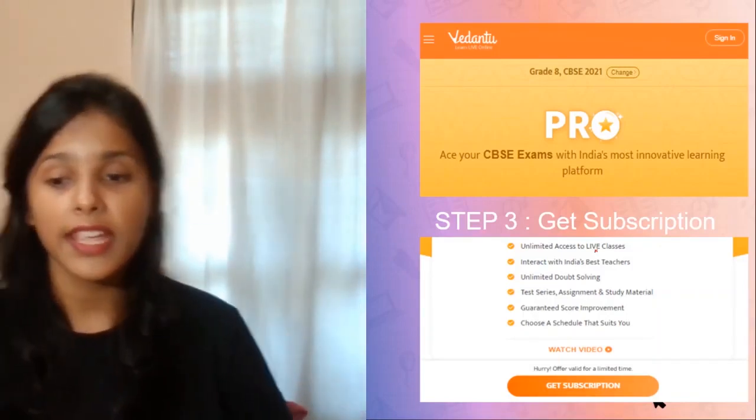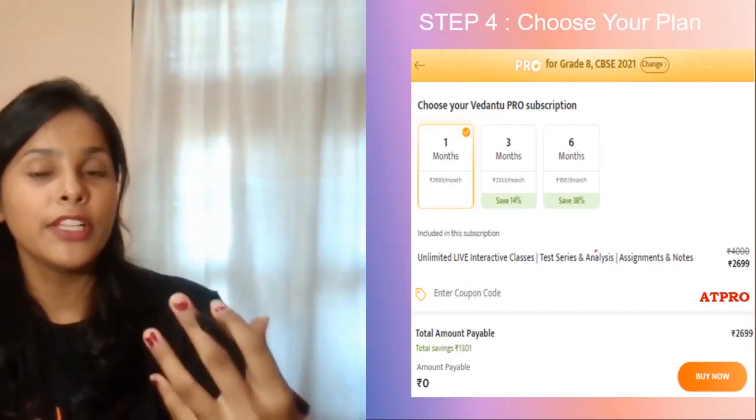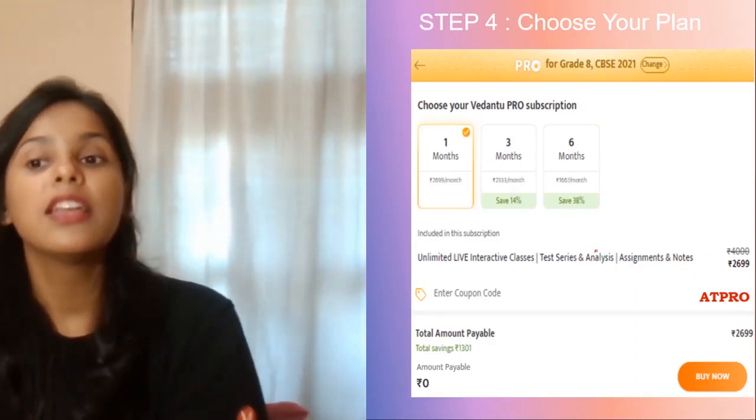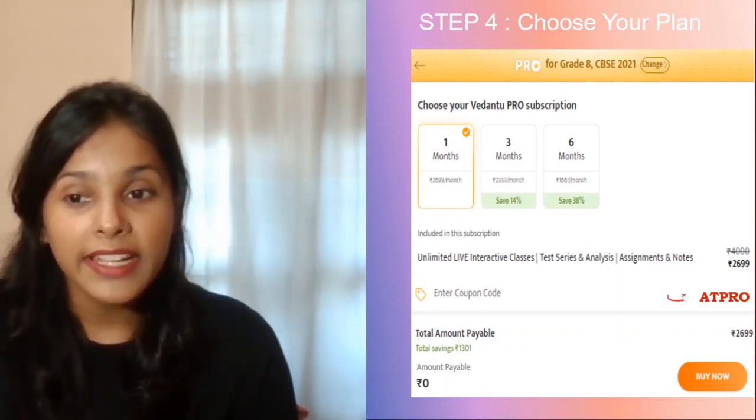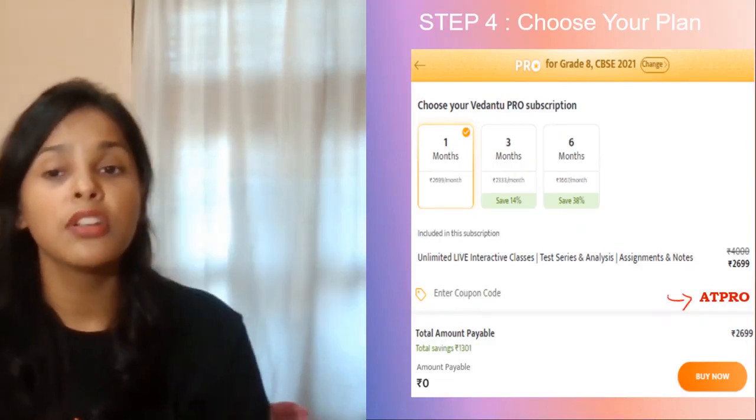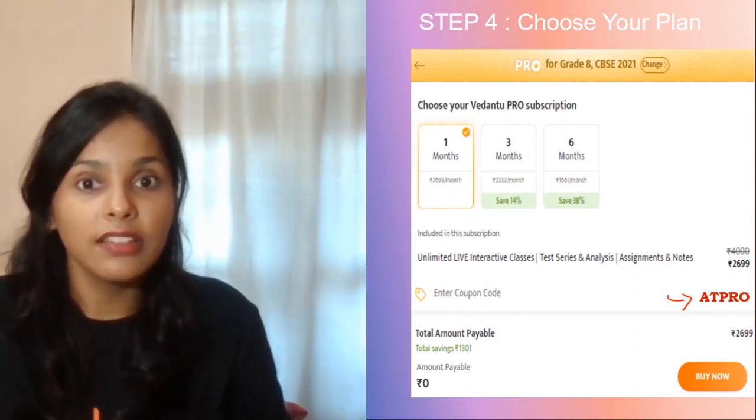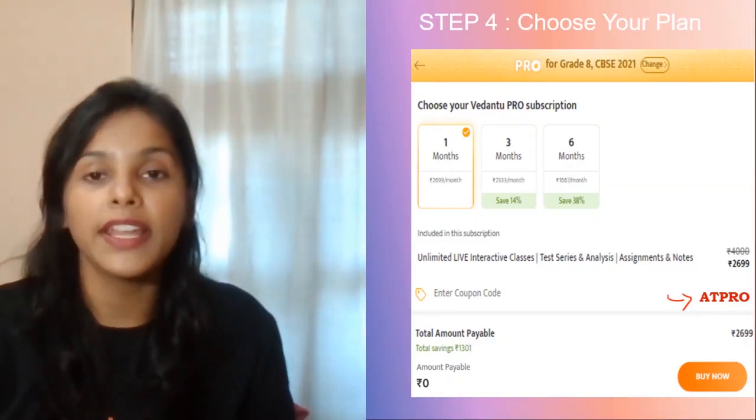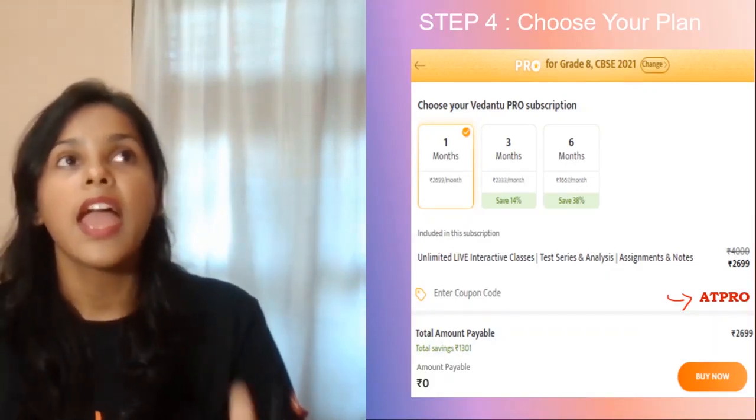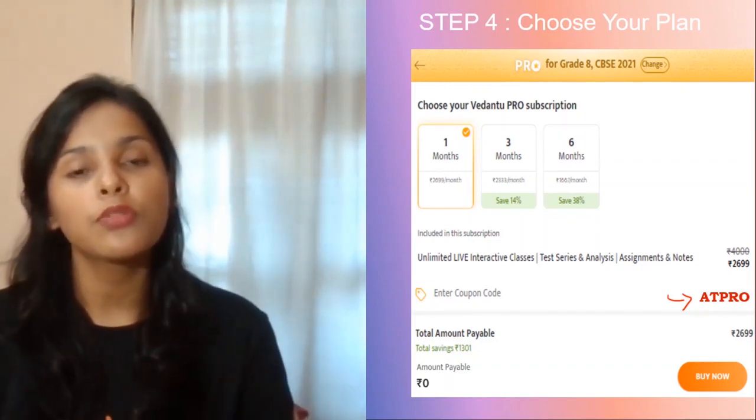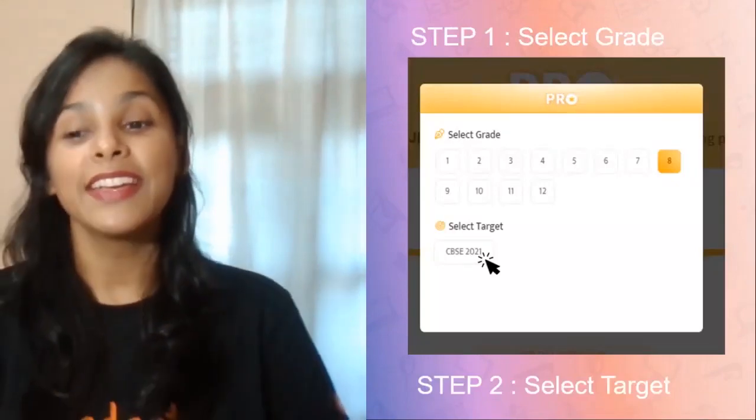The most important thing is you're going to get a schedule that suits you. If you're comfortable learning at 5 PM, then you can take up that batch also. What are you waiting for? Go and select your Pro monthly subscription plan. If you're not willing to go for six months directly, go for the one-month plan. You'll get a 4000 rupee plan right now at 2699 if you use the code 80PRO. This is even less than offline classes. Go ahead and try it for one month. You're going to love it and be amazed. Let's move back to our topic for today.